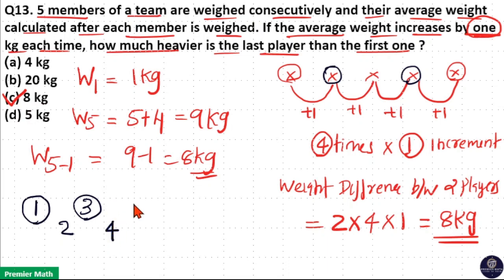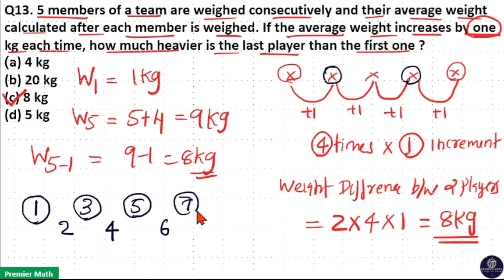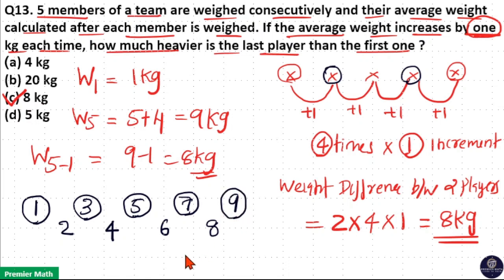Again, if the weight of the 2nd person is 3 kilograms and average increases by 1, the new average is 4. Now, 4 into 3 is 12 — wait — 4 into 2 is 8, and 8 minus 3 is 5. So, the weight of the 3rd person is 5 kilograms. Average increases by 1 means 5 plus 1 equals 6, the new average. So, 6 into 2 is 12, and 12 minus 5 is 7. So, the weight of the 4th person is 7 kilograms. Again, average increases by 1 means 7 plus 1 equals 8, the new average. 8 into 2 is 16, and 16 minus 7 is 9 kilograms. So, the weight of the 5th person is 9 kilograms.